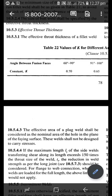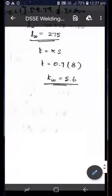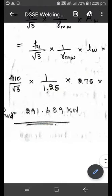So for this case the constant k is equal to 0.7. So by multiplying 0.7 into 8, I will get the throat thickness as 5.6. So I have substituted all the values here.